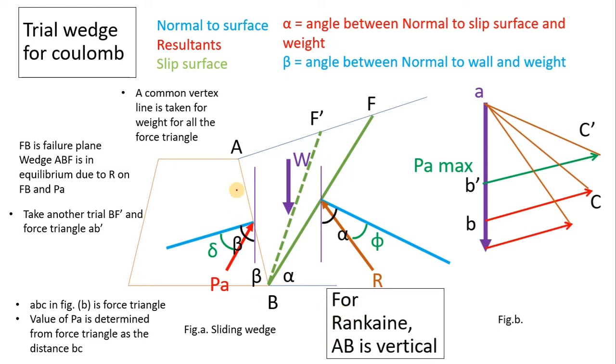For Rankine, only difference is that AB is taken to be vertical, that is, the wall will be vertical. Then we can draw pressure locus by joining these points.